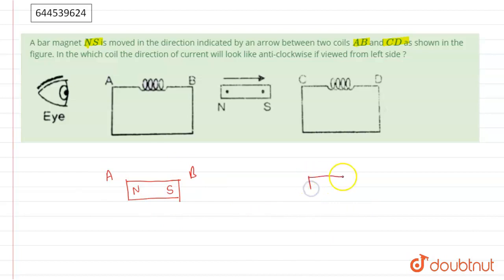Similarly, in CD, the flux is increasing, so it wants to decrease the flux. So it will repel the bar magnet. So the end C will become south and the D end will become north.